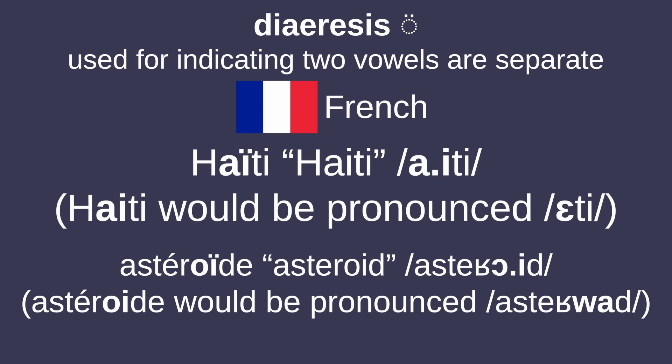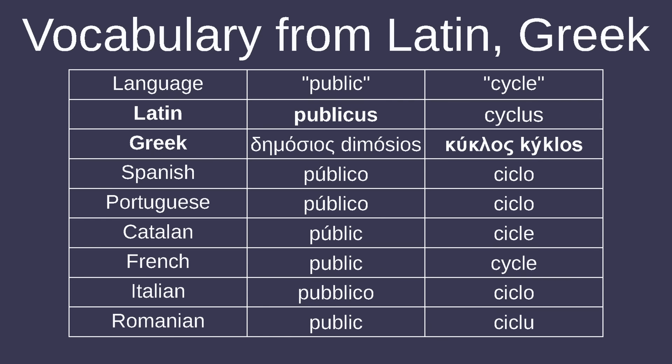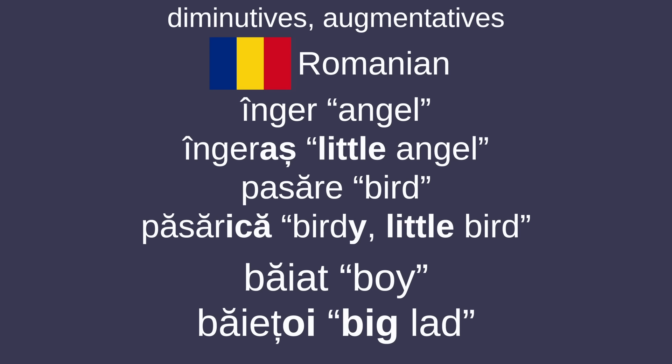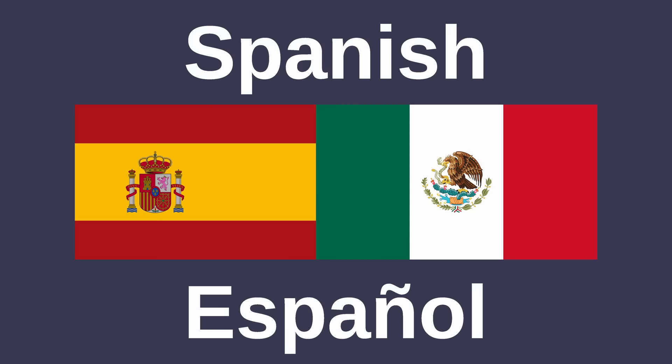Some languages also use diaresis to indicate that two vowels are pronounced separately and not as one. The majority of words in Romance languages are inherited from Latin, and there are a lot of learned borrowings from both Latin and Greek. A lot of the languages make frequent use of diminutives and a few augmentatives as well. Finally, we can start talking about these languages individually, starting with Spanish.